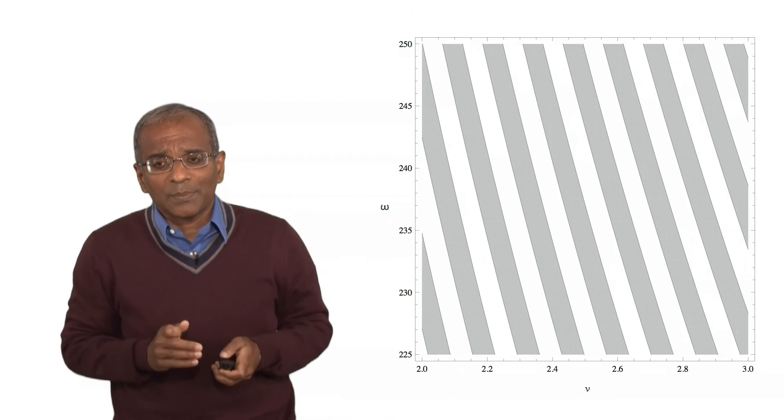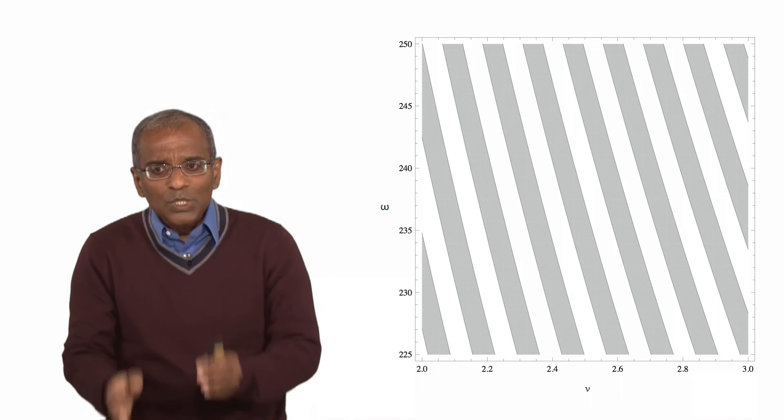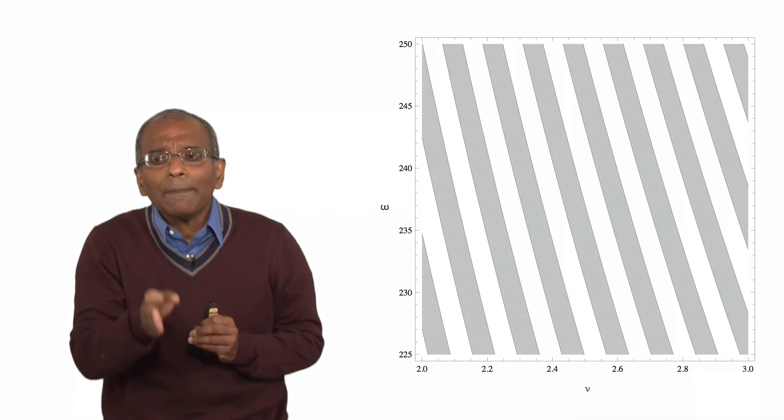Velocities between 2 to 3 meters per second, angular velocities between 225 and 250 radians per second. And now you notice, the hyperbolic segments which are captured in this little window appear almost vertical. They appear to striate this window in narrow bands.